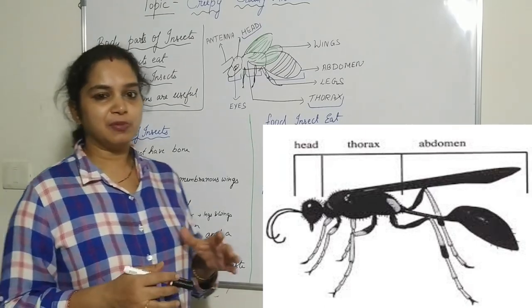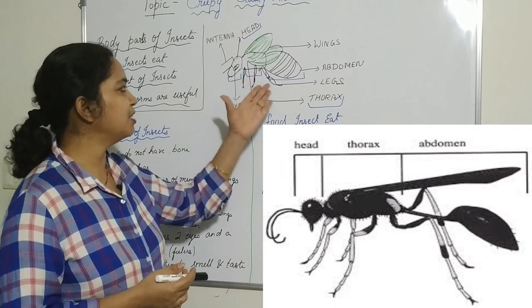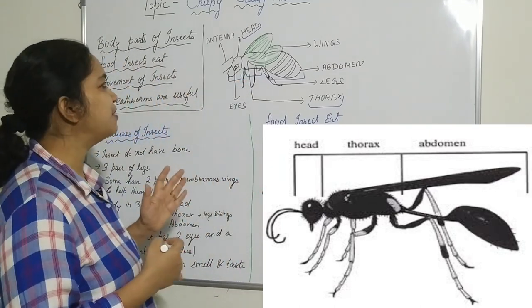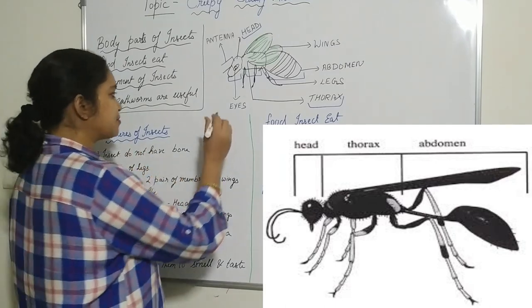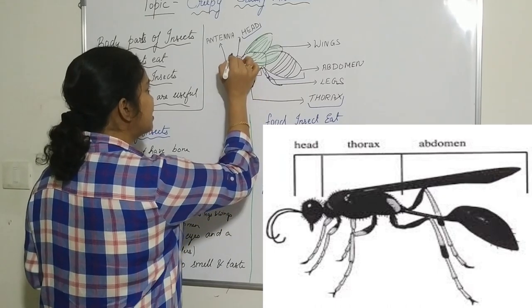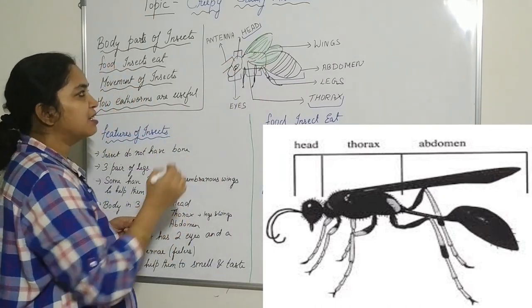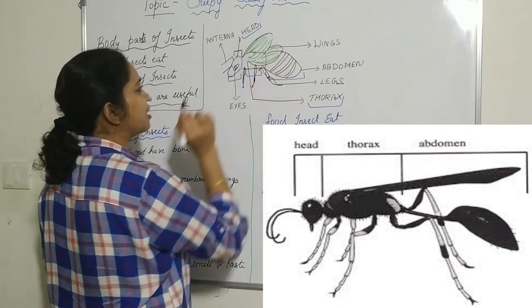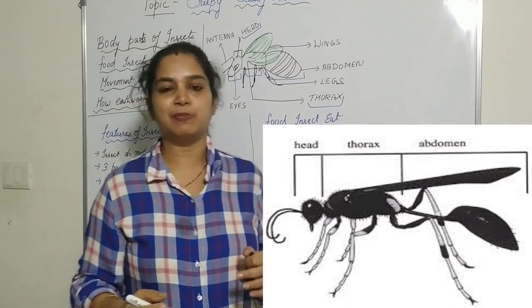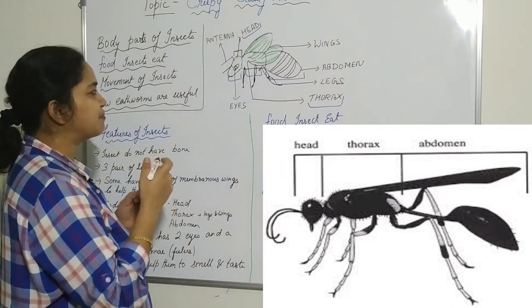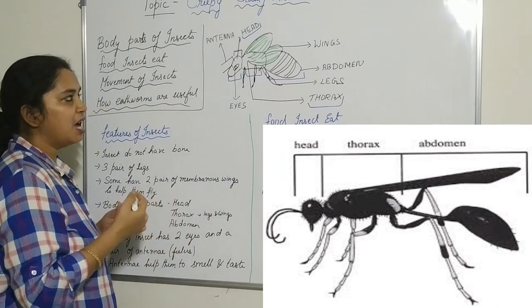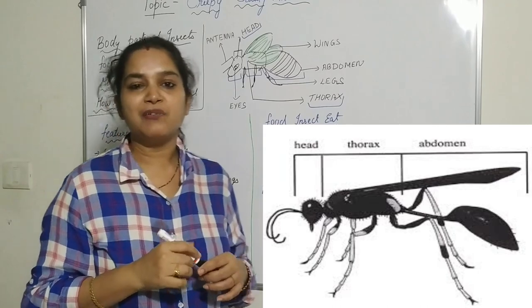First we will look at the features and body parts of the insect. I have drawn an insect — this is a bee. The body of the insect is mainly divided into three parts: the first is the head, the middle part is the thorax, and the third part is the abdomen. On the head you can see a pair of eyes and a pair of antennae.